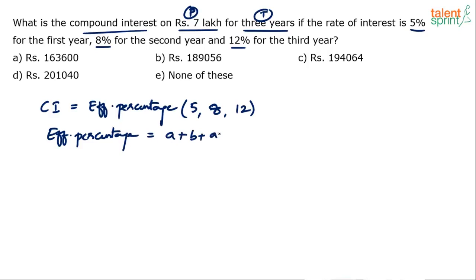A plus B plus AB by 100. So let's do the calculation. You can choose values in any order. Let's take 5 and 12 first. So 5 plus 12 plus 5 into 12 by 100. So 5 plus 12 is 17, 5 into 12 is 60, 60 by 100 is 0.6. So 17 plus 0.6, 17.6 percentage. I am doing the effective of 5 and 12. You do not have to write all these steps in the exam. Just for the sake of clear explanation, I am doing it.